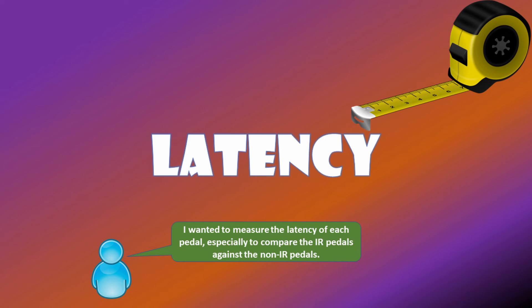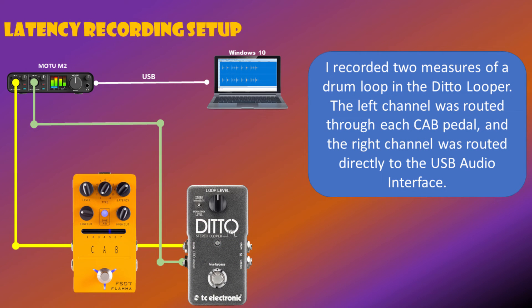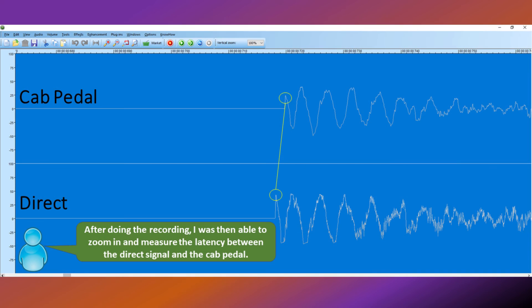I wanted to measure the latency of each pedal, especially to compare the IR pedals against the non-IR pedals. I recorded two measures of a drum loop in the Ditto looper. The left channel was routed through each cab pedal, and the right channel was routed directly to the USB audio interface. After doing the recording, I was then able to zoom in and measure the latency between the direct signal and the cab pedal.